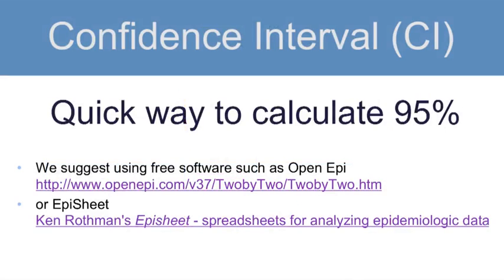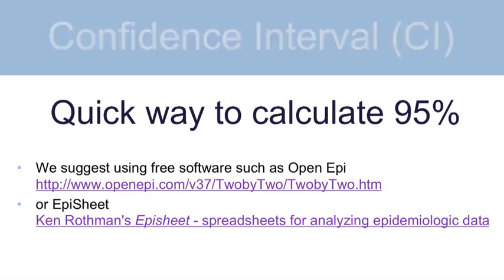For beginning epidemiology students, there is free software available to calculate 95% confidence intervals. These include OpenEpi and EpiSheet. Using either of these spreadsheets, you can plug in the numbers for each of the four cells in a 2x2 table, and they will calculate the standard error and the related 95% confidence intervals.